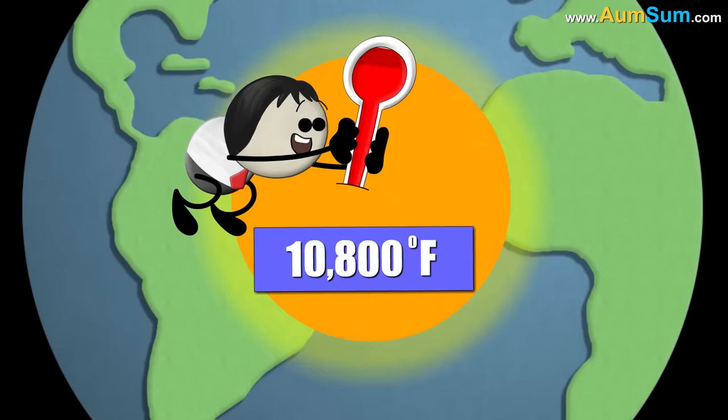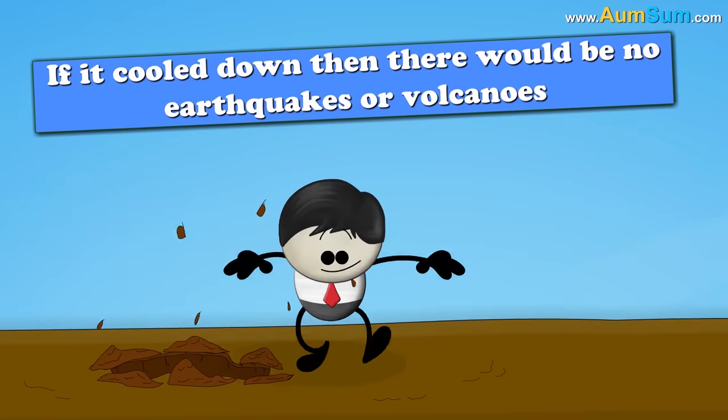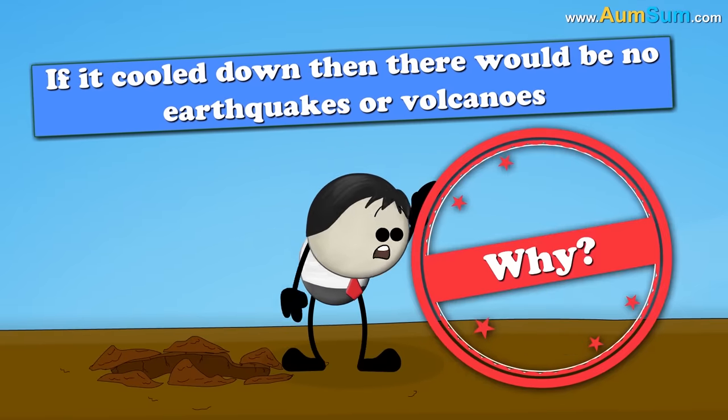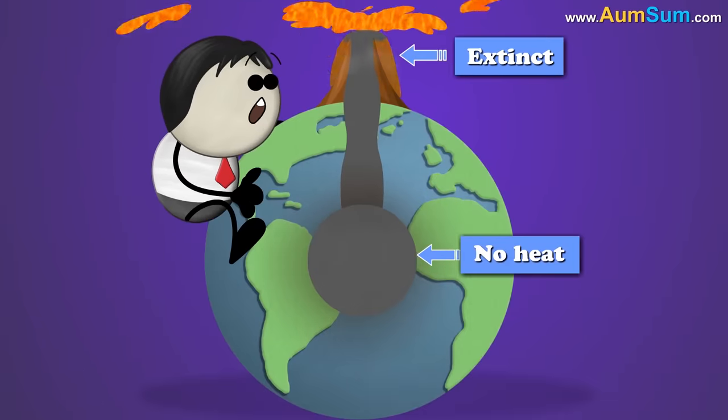Earth's core temperature is about 10,800 degrees Fahrenheit. If it cooled down then there would be no earthquakes or volcanoes. Why? No heat means all the active volcanoes would suddenly become extinct.